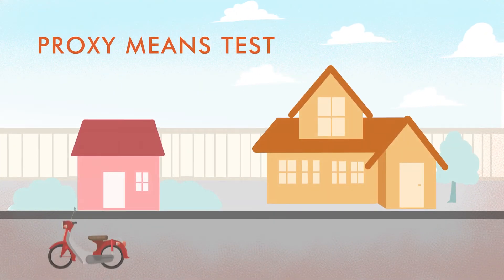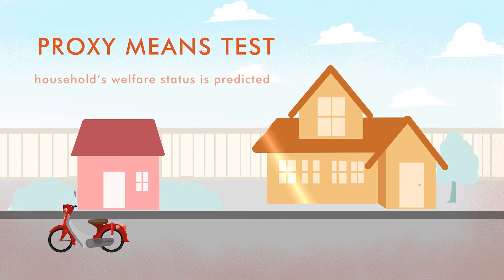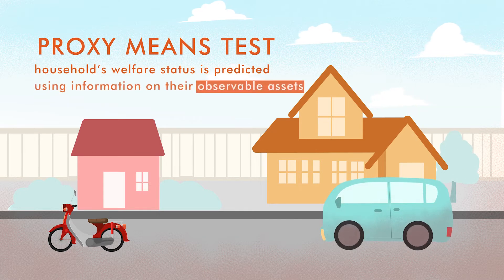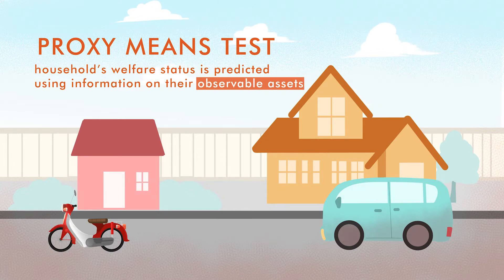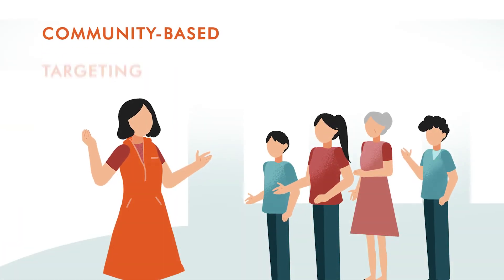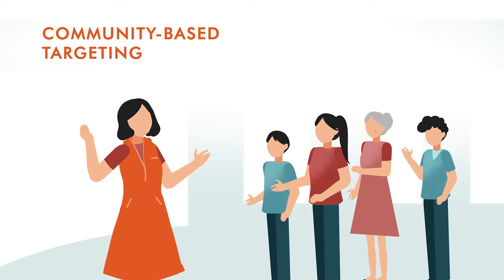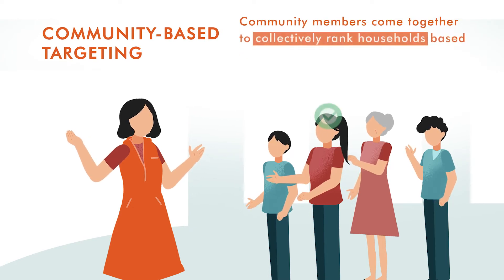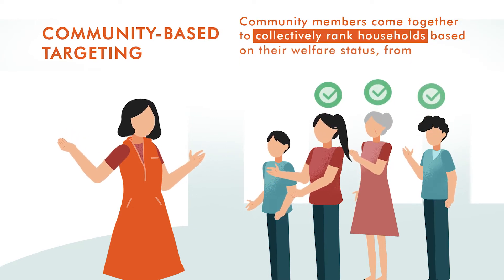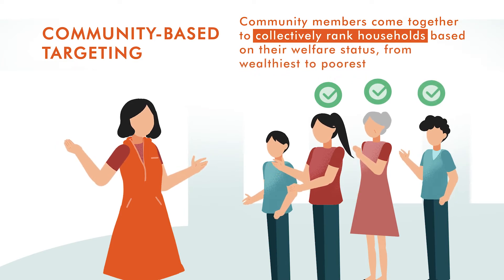First, a proxy means test, in which a household's welfare status is predicted using information on their observable assets such as their house size or ownership of a vehicle. And second, community-based targeting, where community members come together to collectively rank households based on their welfare status from wealthiest to poorest.